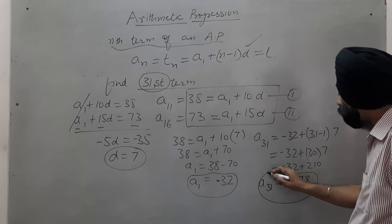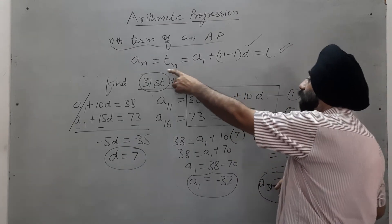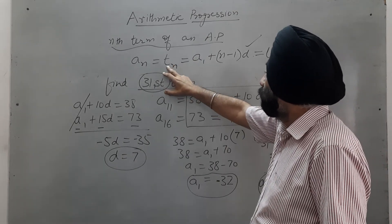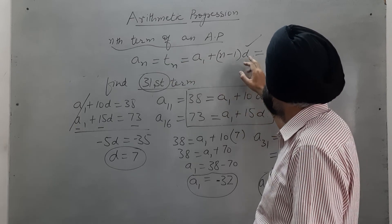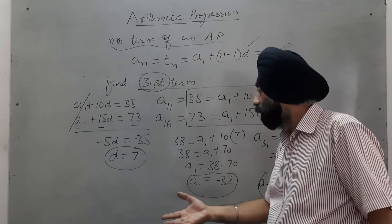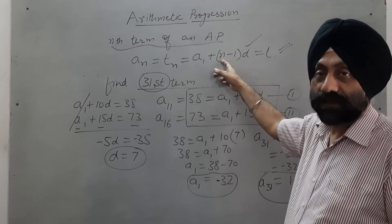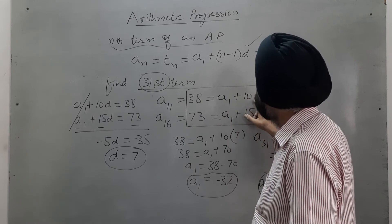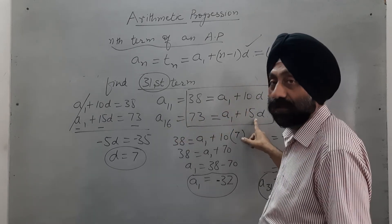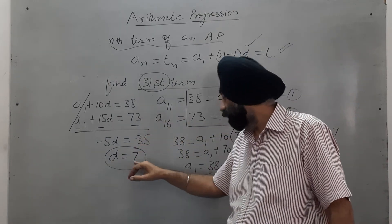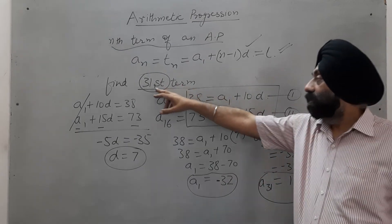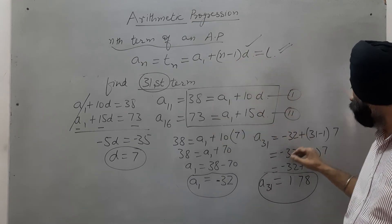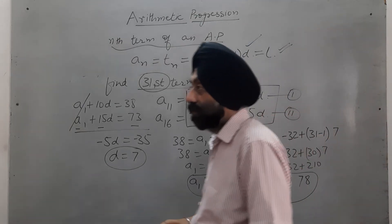Hope you have understood the concept. The only formula used is A₁ + (n minus 1) × D to calculate either the Nth term or the last term. To find any term, you need the first term, the common difference, and the number of terms. If any one of the three is unknown, it can be calculated from the other two.